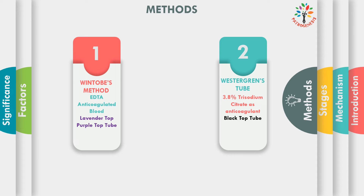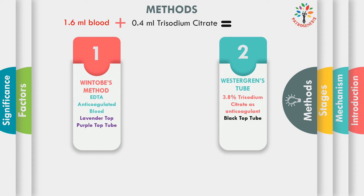If you are going to perform ESR by Westergren method, you have to choose 3.8% trisodium citrate as anticoagulant. For that, you have to pick up a black top vacutainer. 3.8% trisodium citrate is a liquid anticoagulant. The black top vacutainer contains 0.4 ml of anticoagulant. We have to mix 1.6 ml of blood with 0.4 ml of 3.8% trisodium citrate, giving a total volume of 2 ml.